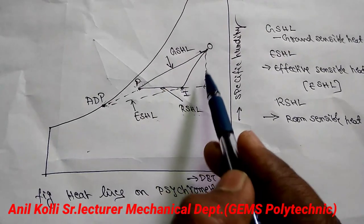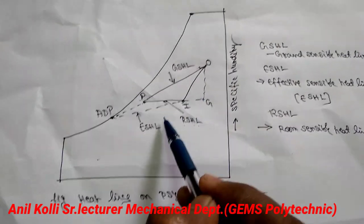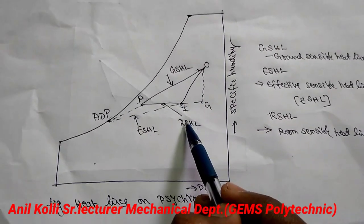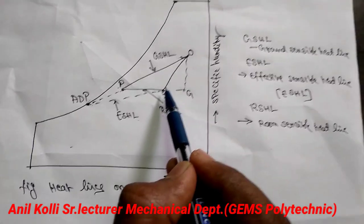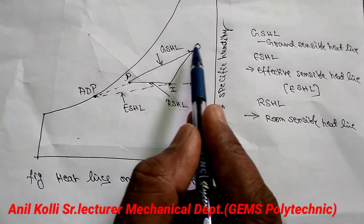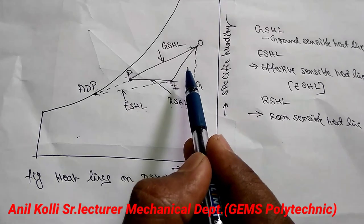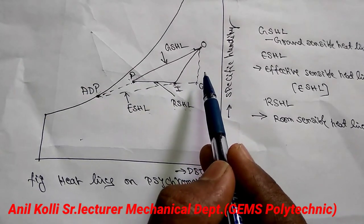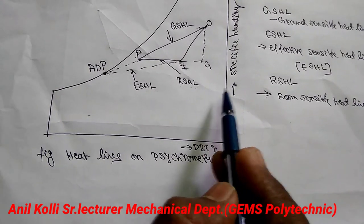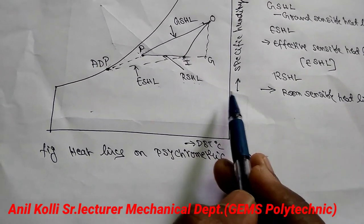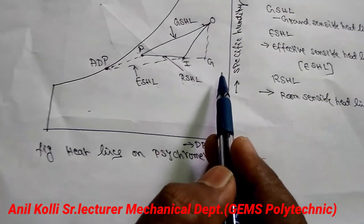Using a psychrometric chart, we identify the heat lines such as ESHL (effective sensible heat line), RSHL (room sensible heat line), ADP, and sensible heat factor. So these are the definitions of bypass factor, ADP, sensible heat factor, room sensible heat factor, grand sensible heat factor, and effective sensible heat factor.